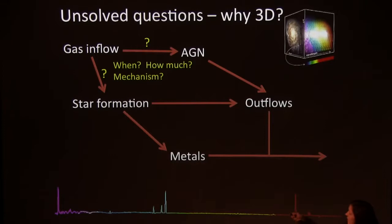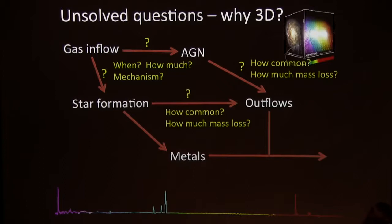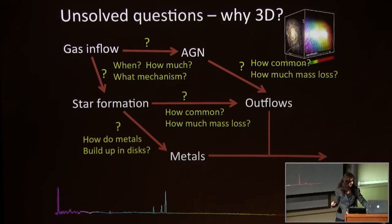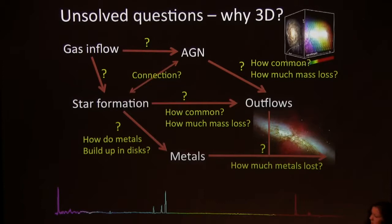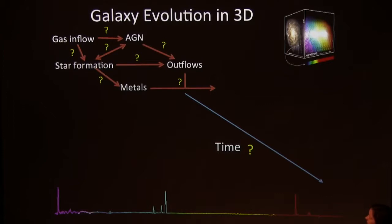There are all sorts of unsolved questions. We don't understand when and how much gas is inflowing or by what physical mechanism. We don't understand how common AGN outflows or star formation-driven outflows are, or how much mass is lost. We don't fully understand how metals build up in discs or how much are lost in outflows. We also don't know if there's a connection between star formation and AGN, or whether this changes with time. It's a complicated problem, and simulations don't tell us what's really happening — so I'm doing this observationally.